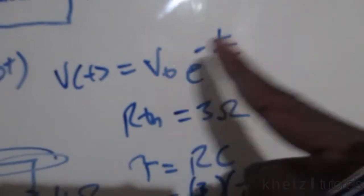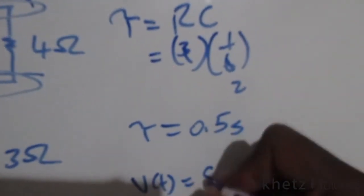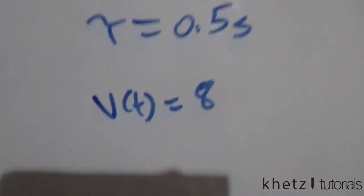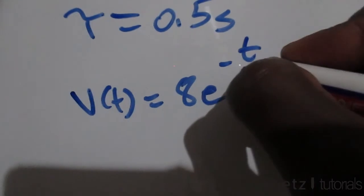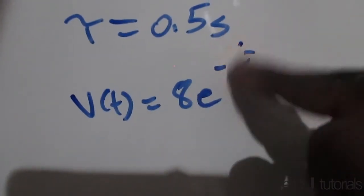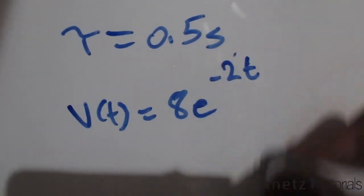Now substituting everything that we have into this formula, we're going to have V of t equals 8, which we found as our initial voltage, and we're going to have e to the negative t divided by 0.5. So 1 divided by 0.5 is going to be 2, and writing this in compact form gives us this, in volts, for time greater than or equal to zero.